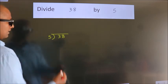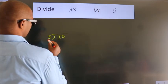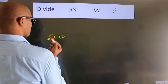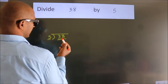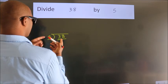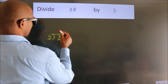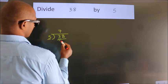Next. Here we have 3. Here 5. 3 smaller than 5. So we should take two numbers, 38. A number close to 38 in 5 table is 5 times 7 equals 35.